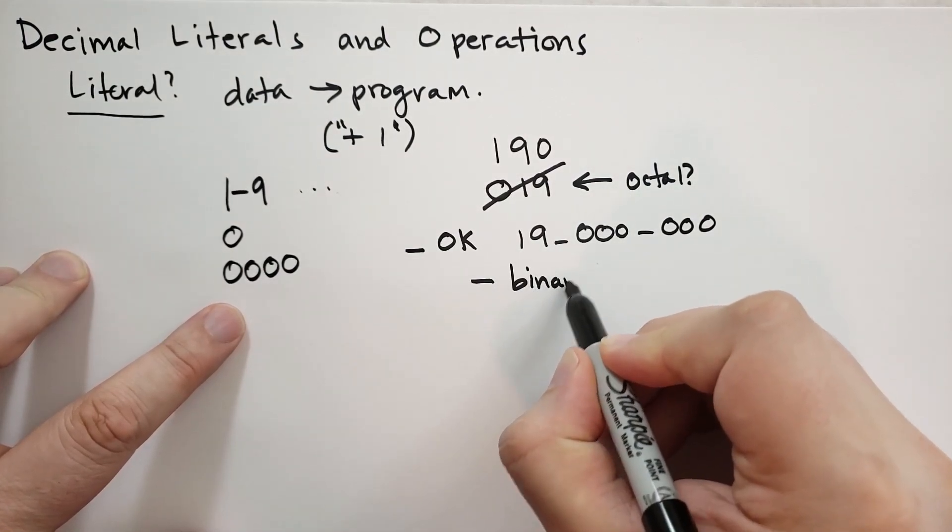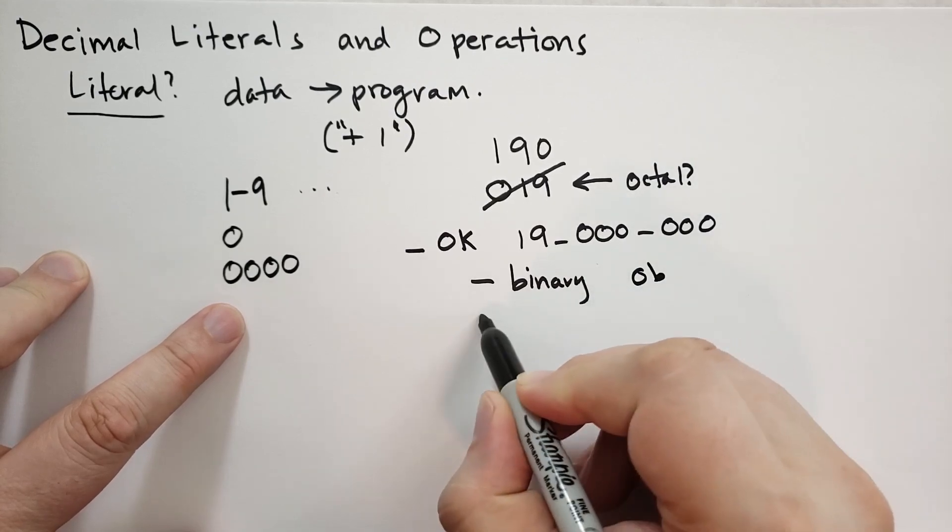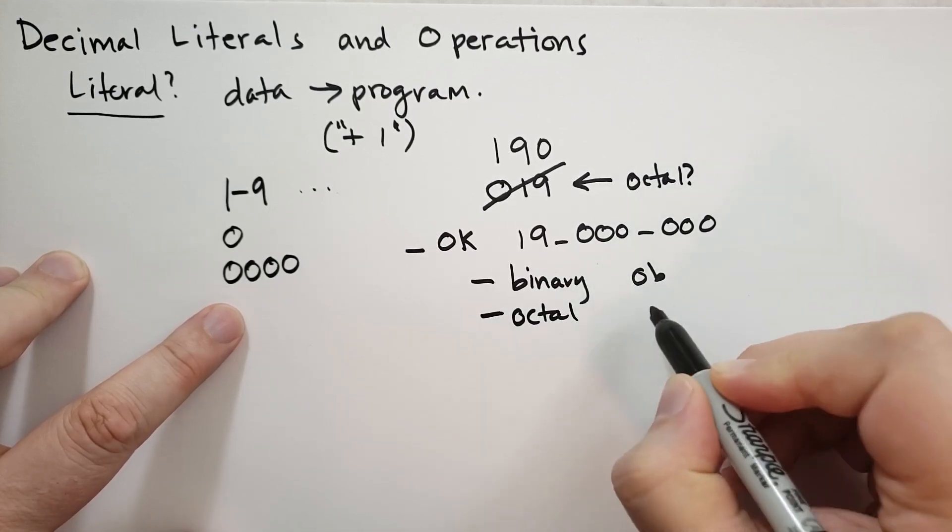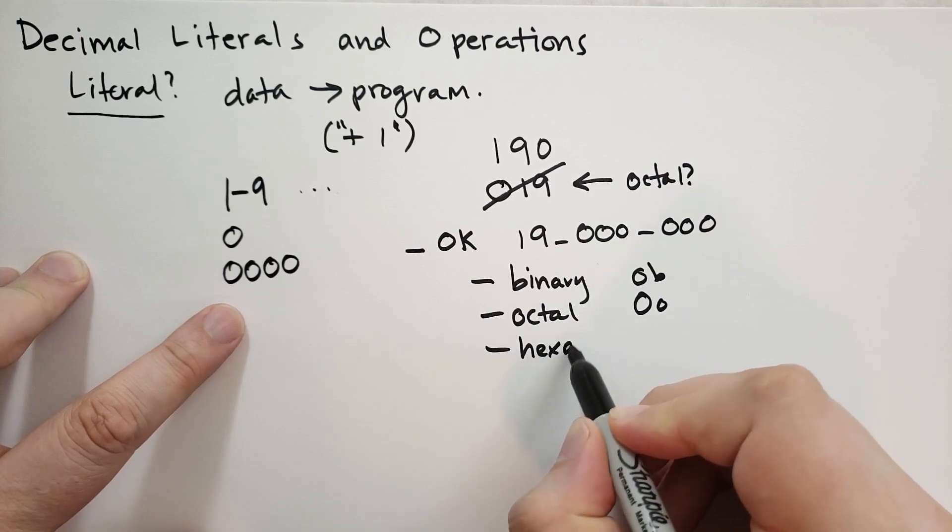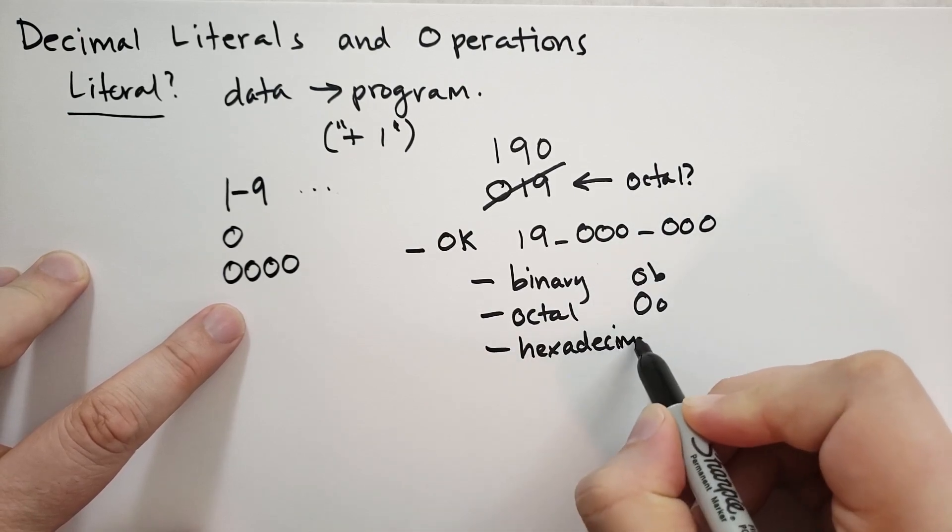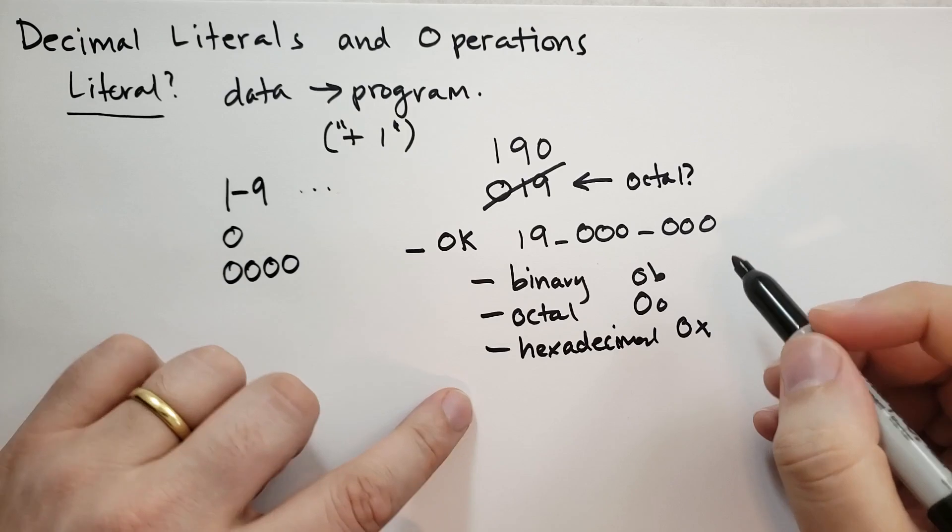There's going to be binary literals. These start with a zero B. There's going to be octal literals. These start with a zero O. There's going to be hexadecimal literals, or hex for short. That starts with zero X.